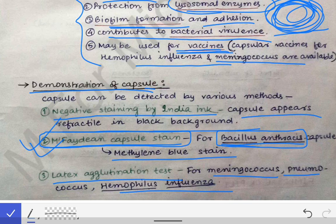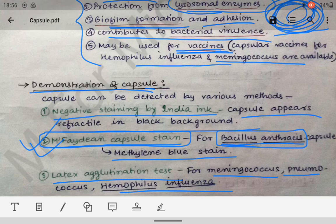We can also perform the latex agglutination test for Meningococcus, Pneumococcus, Haemophilus influenzae, and others to demonstrate their capsules. This is all about the bacterial capsule — this is everything you need to write if it is asked as a short note or short answer question in the university exam.